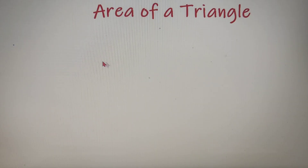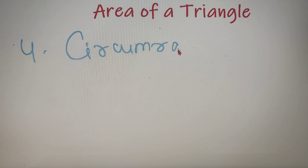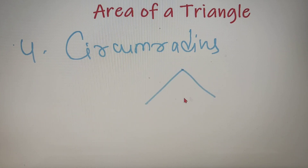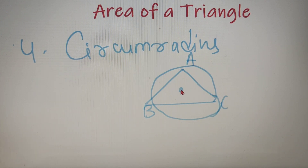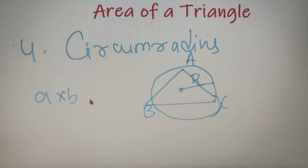The fourth method for calculating the area of a triangle is by using the circumradius. The circumradius of a triangle is the radius of the largest possible circle that can be drawn circumscribing the triangle. So suppose we have a triangle A, B and C, and a circle circumscribing the triangle ABC has radius equal to capital R. Then according to the circumradius formula, the area of the triangle is equal to A into B into C, whole divided by 4R.